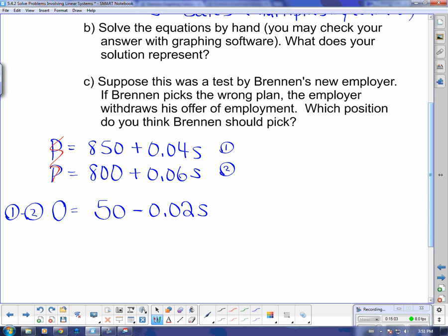And that is my new equation that I can now solve for S because I no longer have a P. So I'm going to make this one my home of the constants and get rid of the variable by adding 0.02S on this side. And if I do that to that side, I have to add it to the other side. So this side becomes 0.02S equals 50.